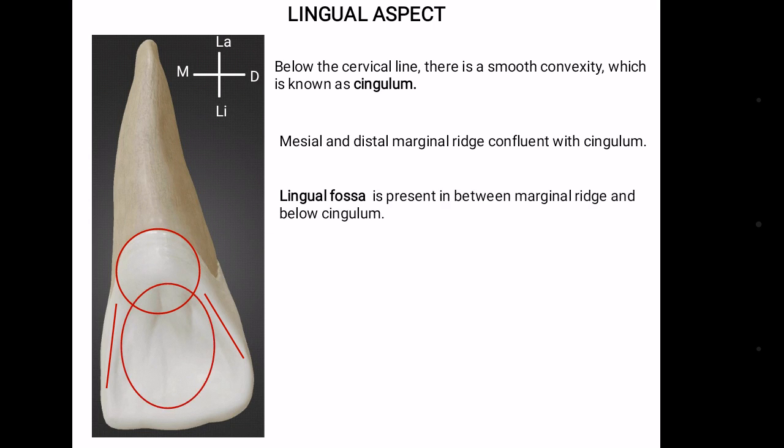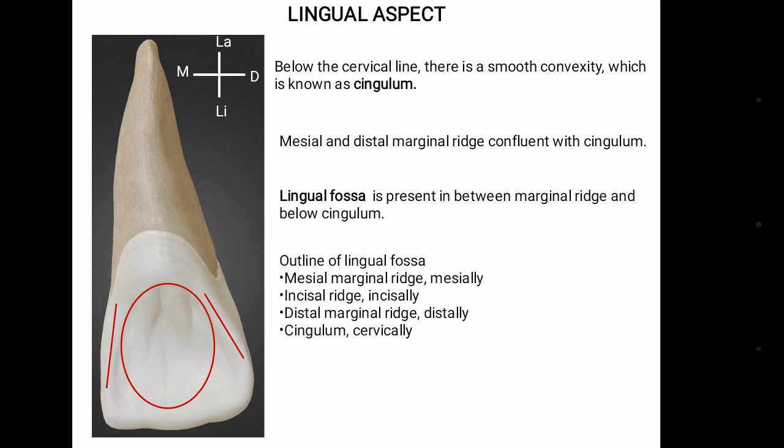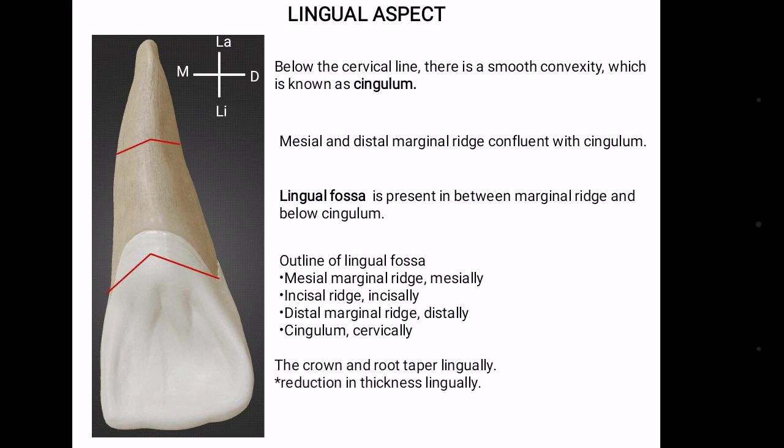Lingual fossa is present between the marginal ridges and below the cingulum. Lingual fossa can be outlined with mesial marginal ridge, incisal ridge, distal marginal ridge, and cingulum. The crown and root taper lingually. Taper in the dictionary means reduction in thickness towards one end. Line angles seen from this aspect are mesolingual and distolingual.